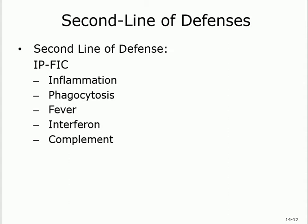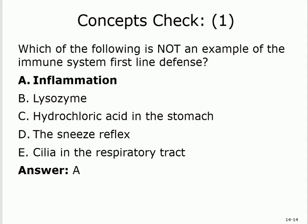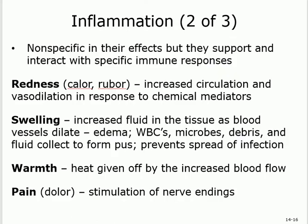You need to see the whole map before we move to details. IP-FIC — five things. Inflammation is not the first line; it's non-specific but second line. Everything else like skin and mucous membrane is first line. So yes, inflammation is second line. A little detail about inflammation — most of this chapter is review.